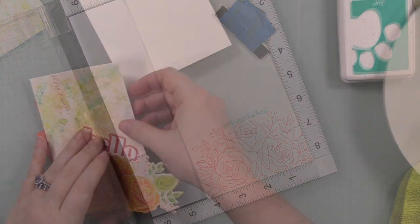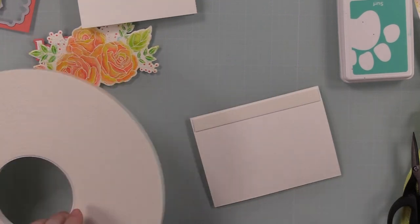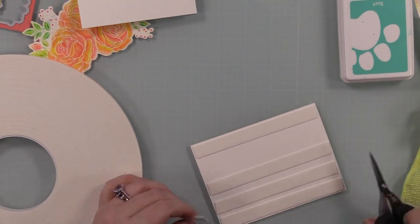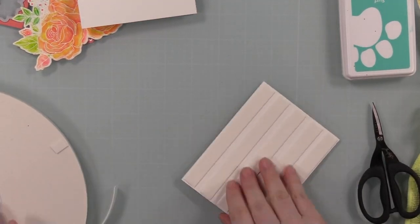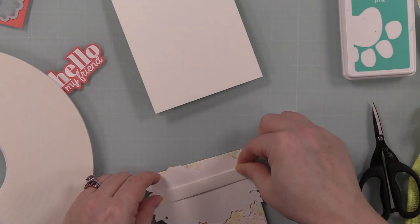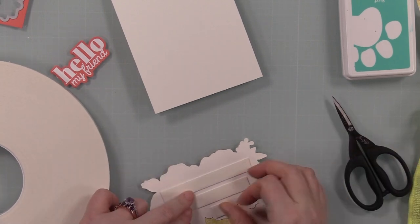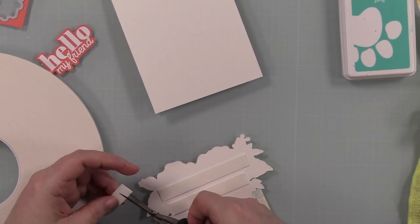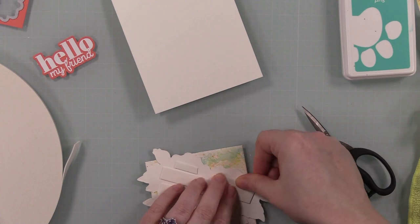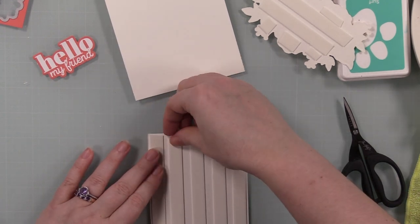Once that's stamped, I die cut my sentiment. To adhere everything, I'm using Simon's Big Mama foam tape. This tape is nice and thin, so it doesn't add a ton of bulk but gives me a little dimension. I coated the background with that, then used that as my guide. I've flipped over the florals so I don't get the foam tape past the edges of everything, making it easier to trim off whatever is hanging over. I put foam tape on the back of this as well. This foam tape is thin enough that I can pop up multiple elements without making this card super bulky.